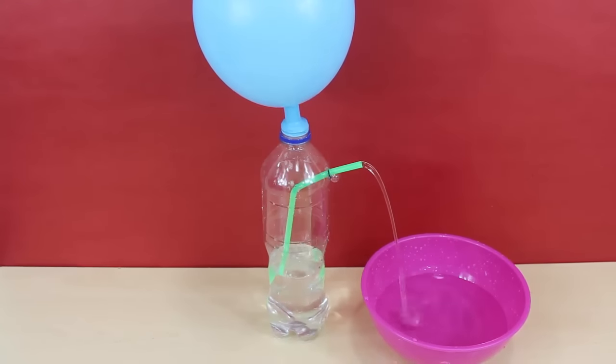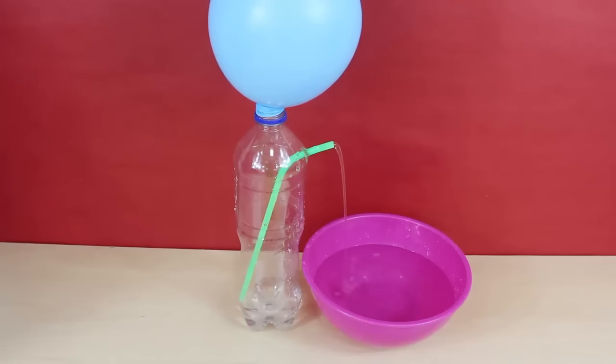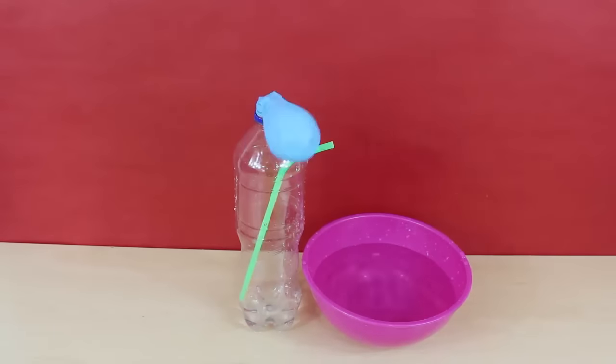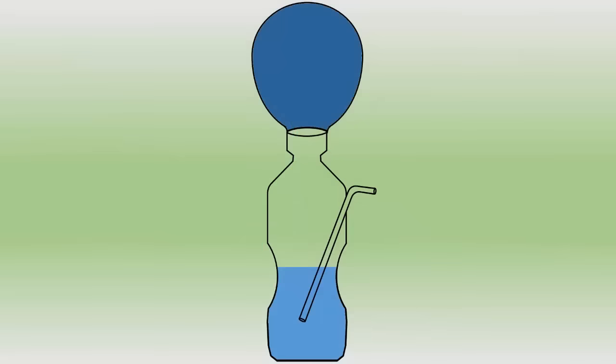So let's look at what actually happens in this experiment. The air inside the balloon is under higher pressure. When you place the inflated balloon on the mouth of the bottle, the air pressure on the top of the bottle increases. This pushes down on the water in the bottle, which rises through the straw and comes out making a little fountain.